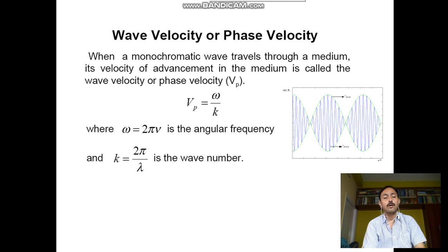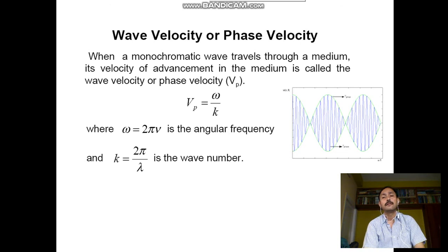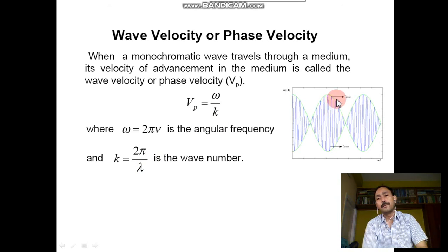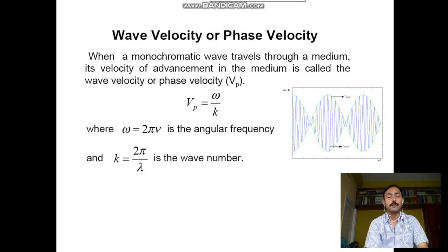We can find the wave velocity or phase velocity. When a monochromatic wave travels through a medium, its velocity of advancement in the medium is called wave velocity or phase velocity. We represent it as vp = ω/k, where ω = 2πν is the angular frequency, and k = 2π/λ is the wave number or propagation constant. In this picture, the envelope represents the wave velocity and the inner one represents the group velocity.